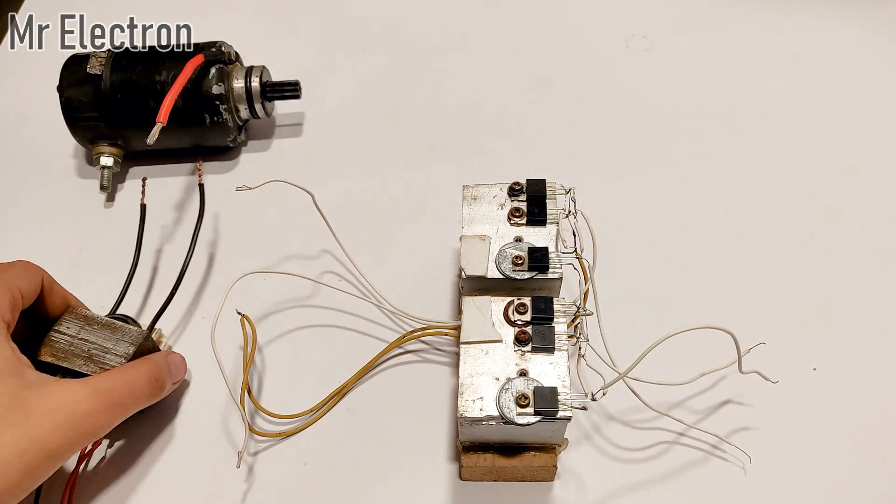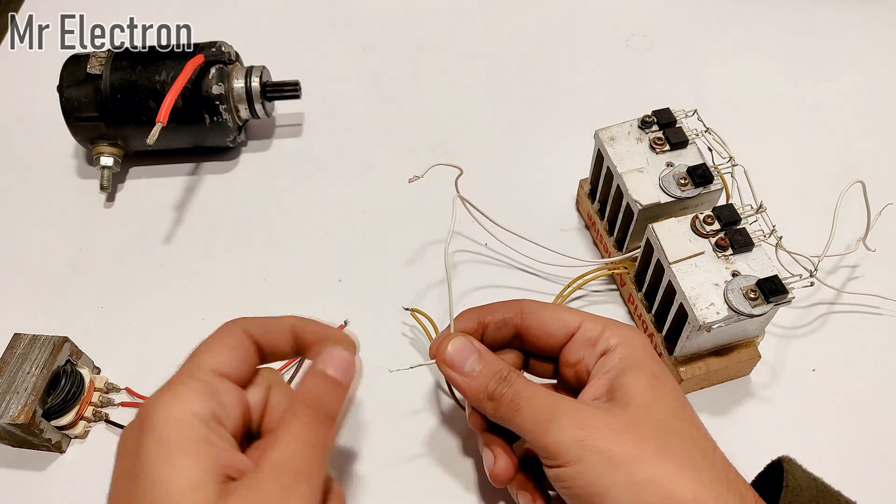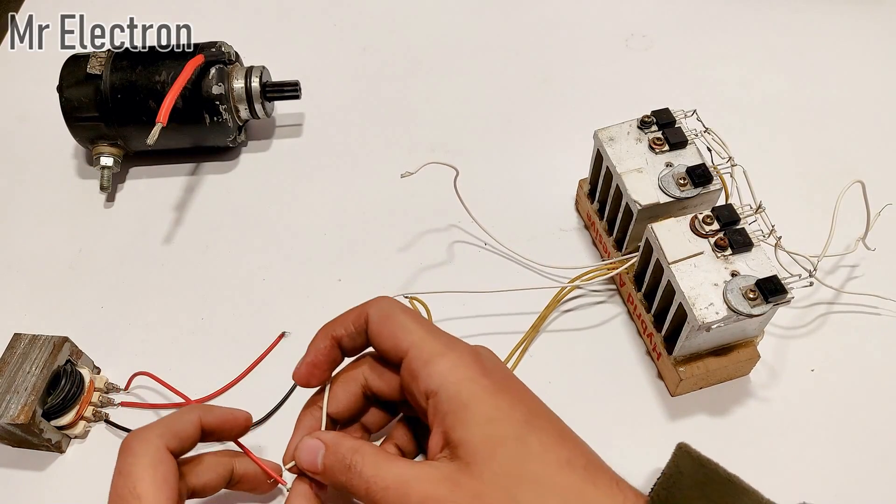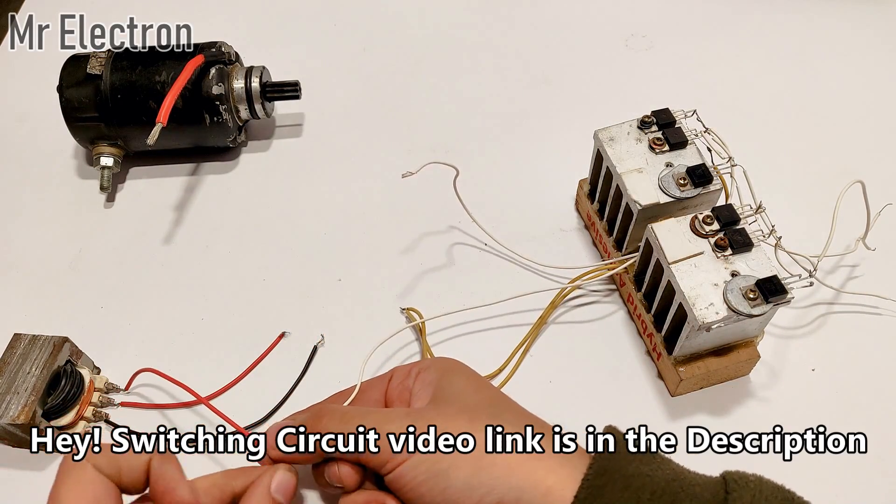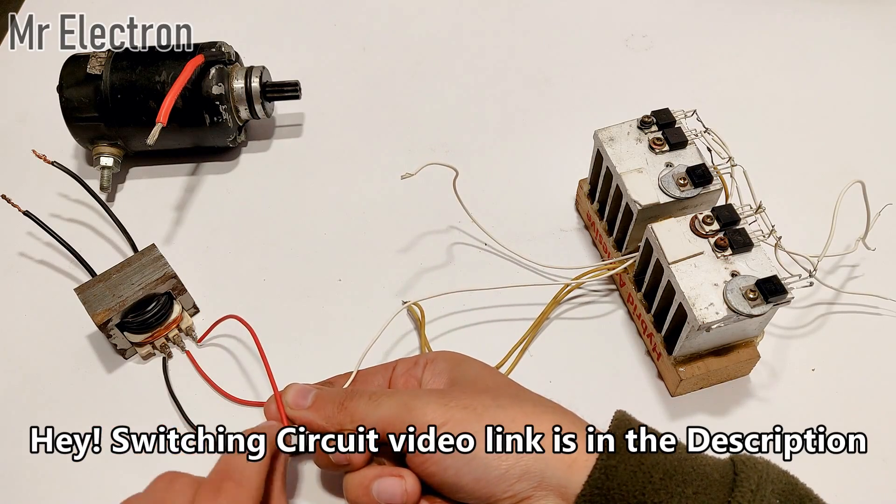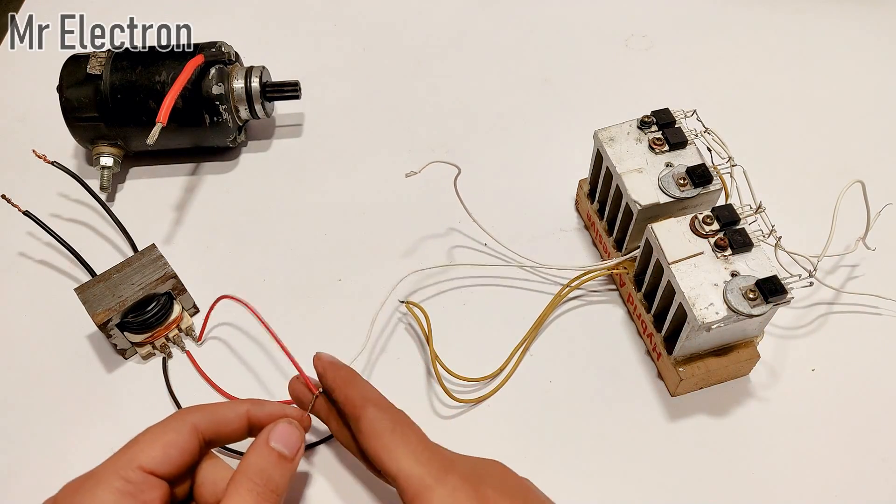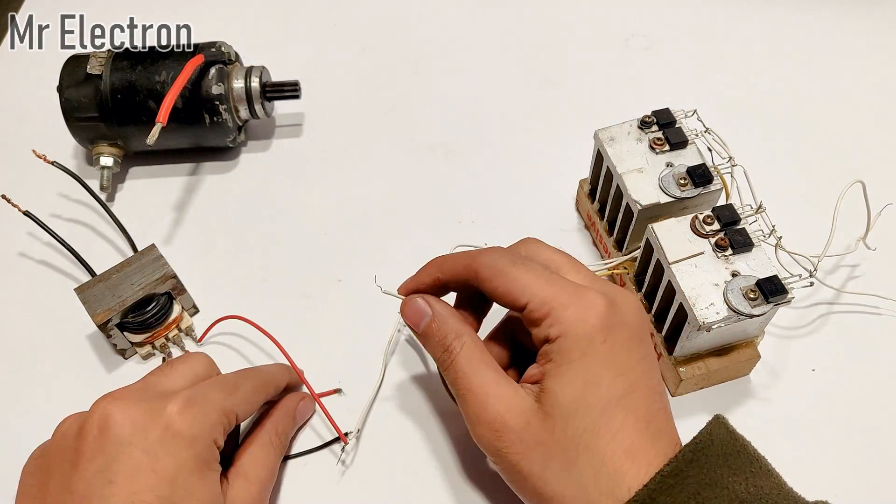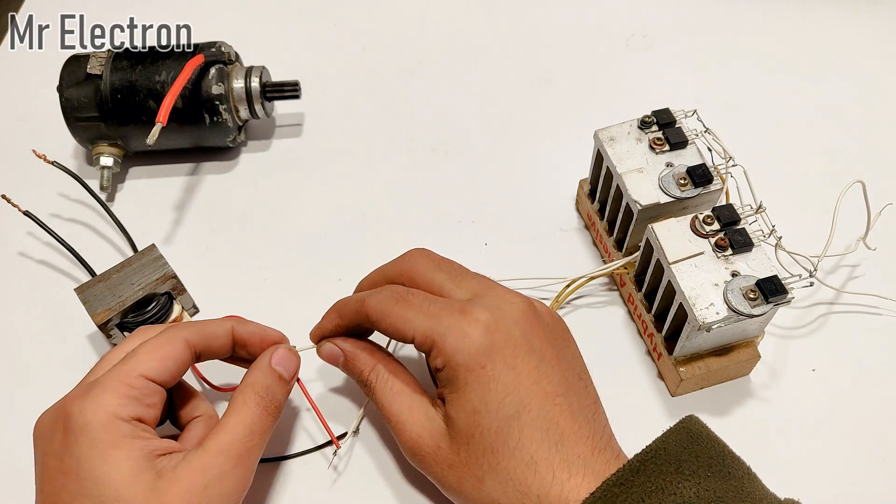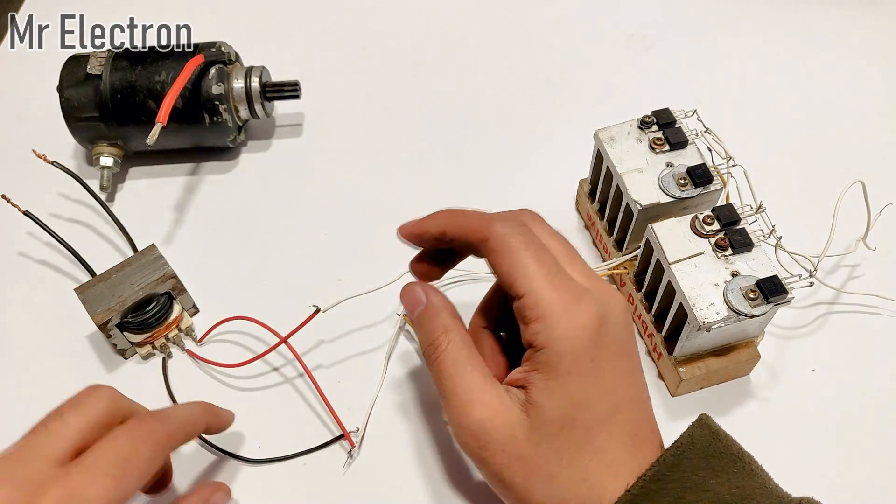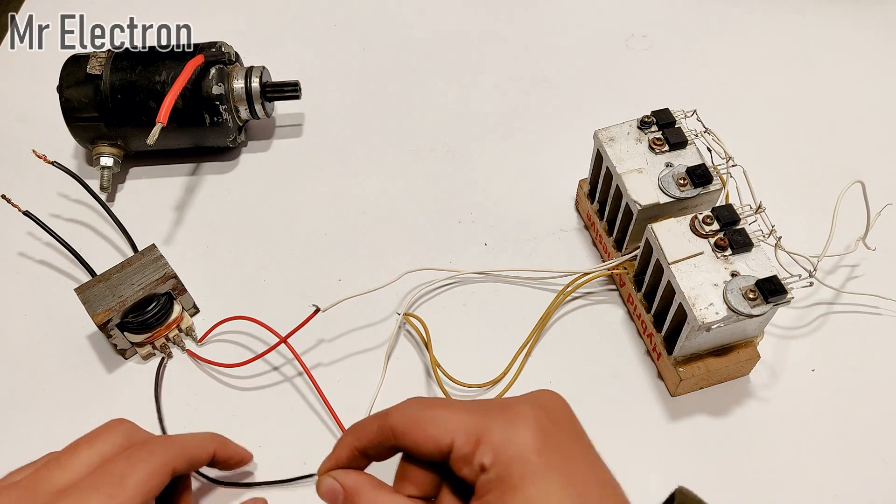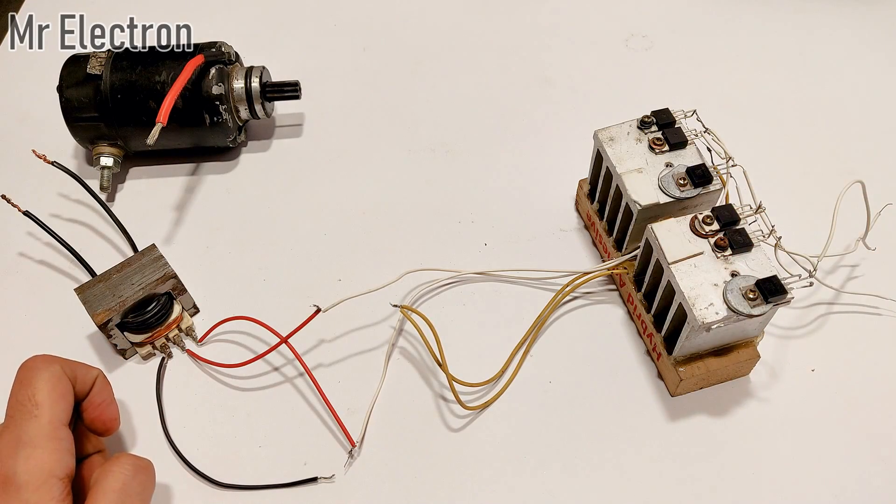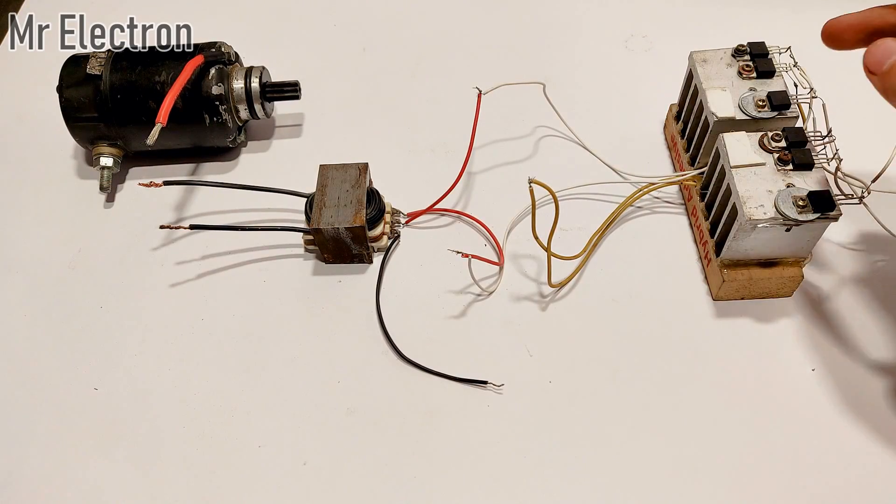Now I'm going to connect this transformer to this circuit. This is the collector terminal, common collector of this set, so it will be connected over here. The collector terminal of this set has been connected to this wire. Now the second collector terminal from this set will be connected to this wire. Now that is done too. All I'm left with is the center tap wire, this one, and the common emitter for this switching circuit.